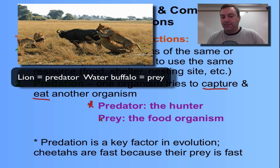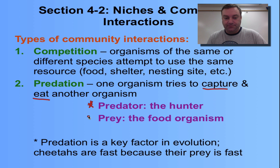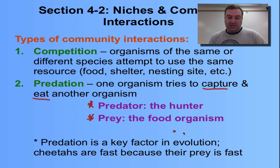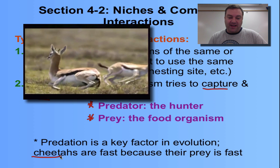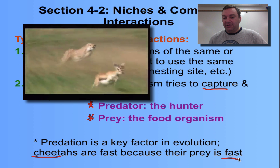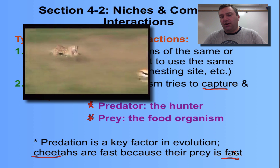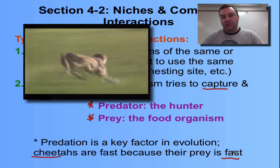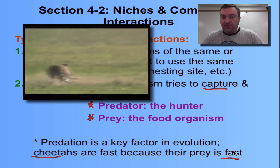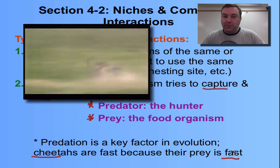Key vocabulary when it comes to predation: the predator is the hunter, and the prey is the food that gets captured and eaten. Predation is a key factor in evolution. For example, cheetahs are fast because their prey is fast. This gives us the concept of co-evolution, where two species evolve in response to each other.